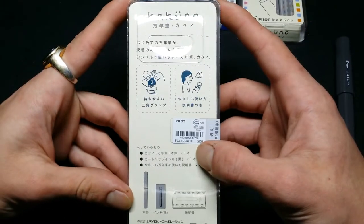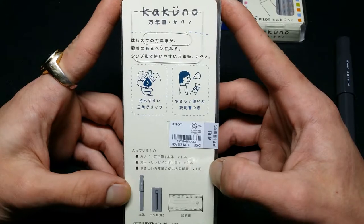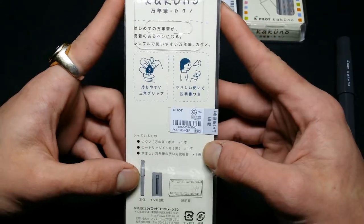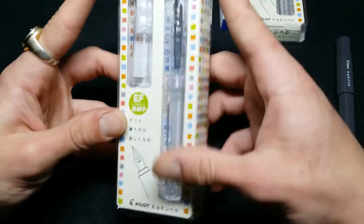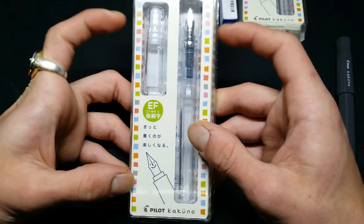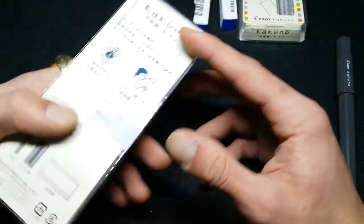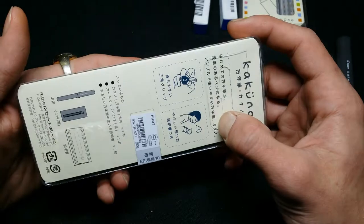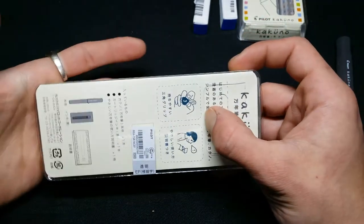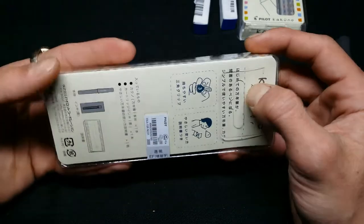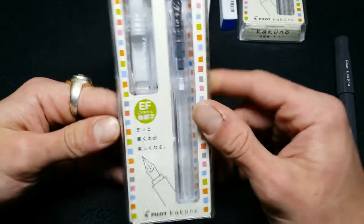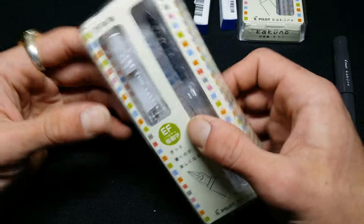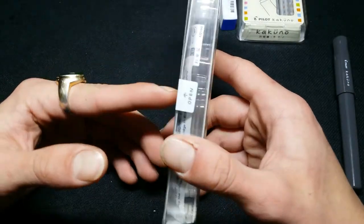External of the packaging. I am unfortunately unable to read Japanese in any way, shape, or form. So that will be helpful to some of you. I ordered these on eBay from Japan, because I totally could have checked on Goulet Pens or Jet Pens or any of the other pen retailers in the United States. But I didn't.